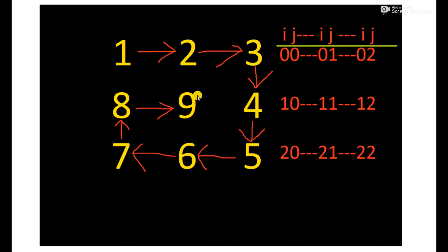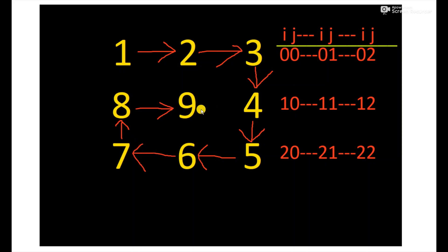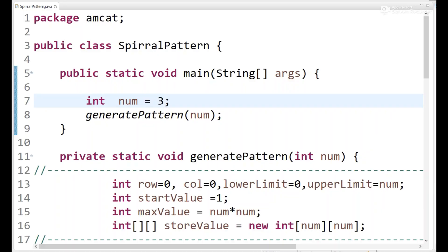When input is 3, we print a 3x3 spiral. We are going to use a 2D array. Array location 0,0 stores 1; we move in format 0,0 then 0,1 then 0,2 then 1,3 then 1,2 and so on, storing numbers 1 through 9.